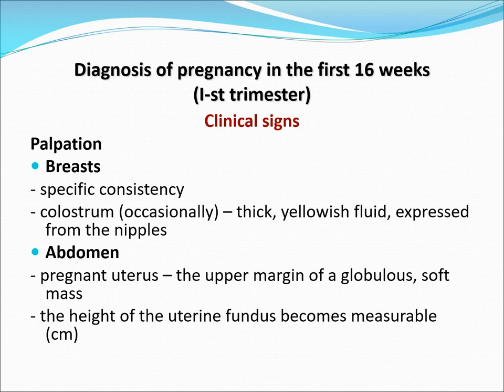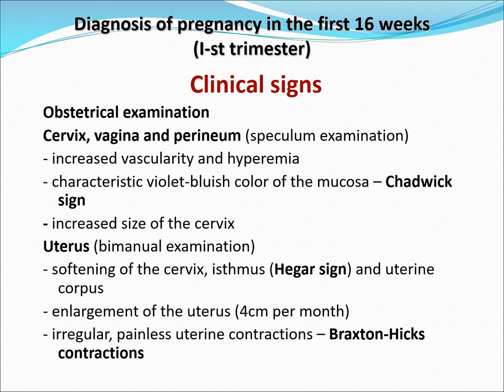We palpate the breast for any consistency, and colostrum may start as early as the first trimester — this is a thick yellowish fluid expressed from the nipples. The abdomen of the pregnant uterus shows the upper margin of a globular soft mass, and the height of the uterine fundus becomes measurable after 12 weeks gestation. Your cervix, vagina, and perineum would begin to show clinical signs as well. There would be increased vascularity and hyperemia, with a characteristic violet-bluish color of the mucosa — your Chadwick sign. Increased size of the cervix, softening of the cervix and isthmus — your Hegar sign — and enlargement of the uterus approximately 4 centimeters per month. And irregular painless uterine contractions, called the Braxton-Hicks contractions.